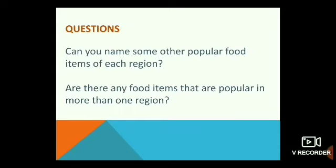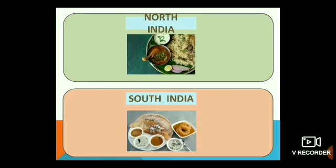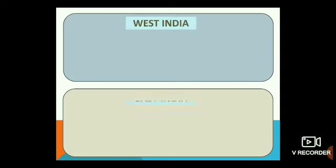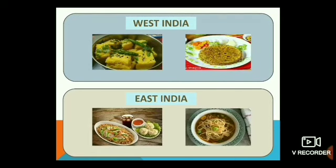Are there any food items that are popular in more than one region? Biryani and curry are popular in North India. Dosa, vada, and sambar are popular in South India. Biryani is popular in both northern and southern parts of India. Even dosa, idli, and sambar are popular all over the country. Dhokla and thepla are popular in West India. Noodles, momos, and thukpa are popular in East India.